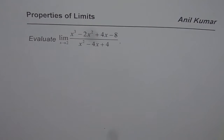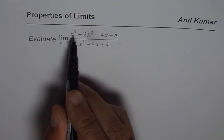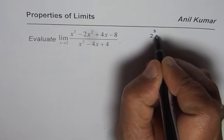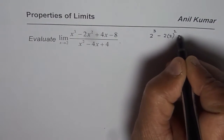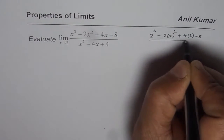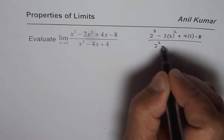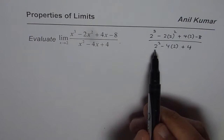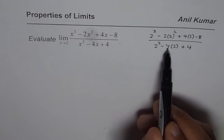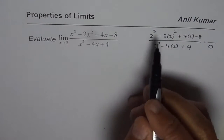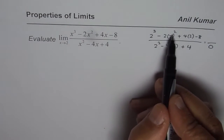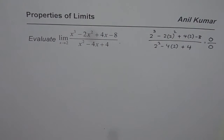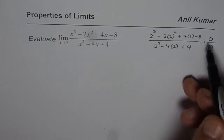For this rational function, what we can do is first substitute 2 into the function itself. If you substitute 2, you get 2 cubed minus 2 times 2 squared plus 4 times 2 minus 8, divided by 2 squared minus 4 times 2 plus 4. Now 2 squared is 4, 4 plus 4 is 8, minus 8 is 0, so we get 0 in the denominator. 2 cubed is 8, 8 minus 8 is 0, so we get 0 in the numerator also.